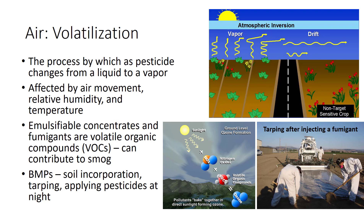Practices that restrict movement of an applied pesticide, such as soil incorporation, tarping, or applying pesticides at night when there is less heat and wind and often high humidity, reduce volatilization.